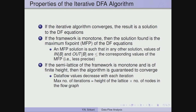This is guaranteed by the framework, but the framework must be monotone. If the semi-lattice of the framework is monotone and of finite height — and all of our semi-lattices are of finite height — then the algorithm is guaranteed to converge and termination is guaranteed. Intuitively, the data flow values decrease with each iteration; the maximum number of iterations possible is the height of the lattice times the number of nodes in the flow graph.